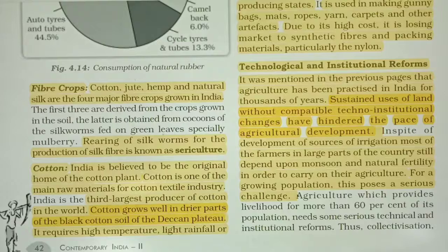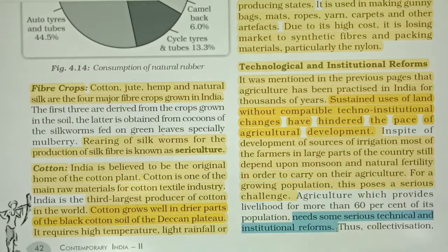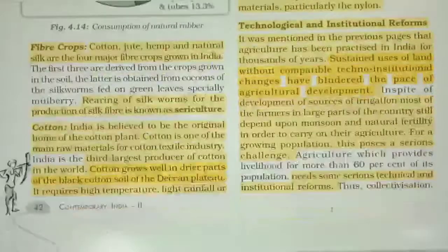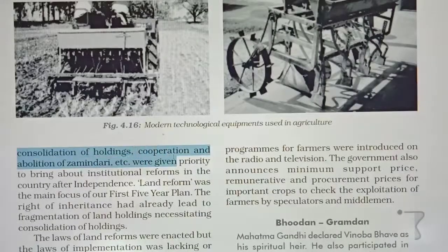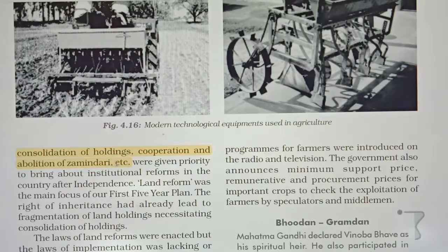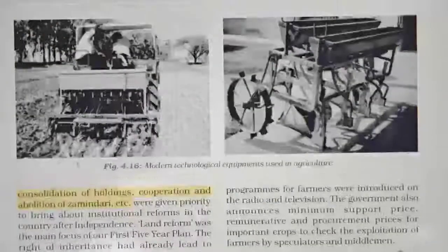Agriculture provides livelihood for more than 60% of the population and needs serious technical and institutional reform. Thus collectivization, consolidation of holdings, cooperation, and abolition of Zamindari were given priority. The government gave priority to removing the Zamindari system and consolidating land holdings.